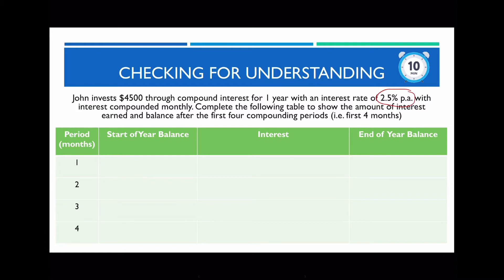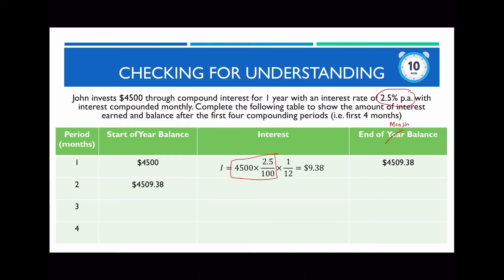If you've done this successfully, the starting balance is $4,500. To find the monthly interest, you would calculate 4,500 × (2.5/100), but this alone gives you the interest for the entire year. So we multiply by 1/12 — dividing by 12 — because we only want one month's interest. This gives $9.38. So the end-of-month balance is $4,509.38.